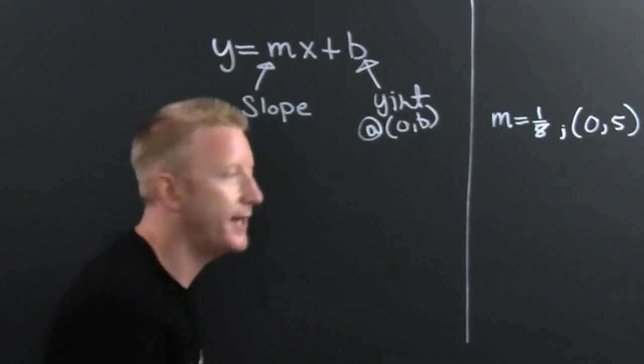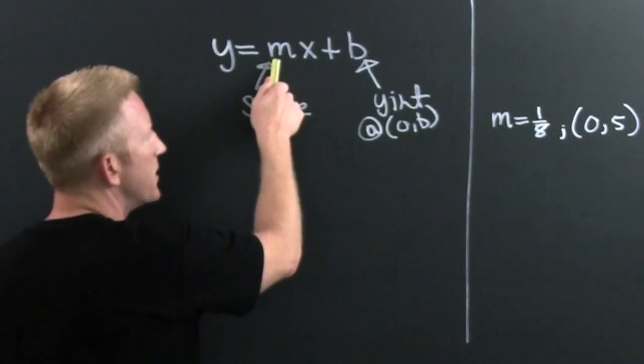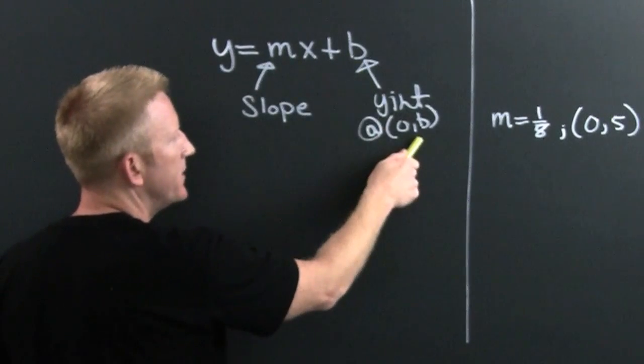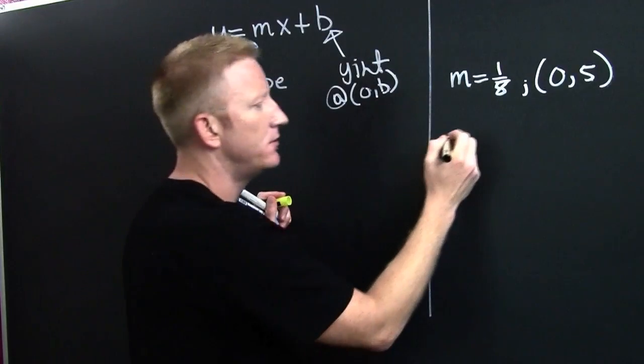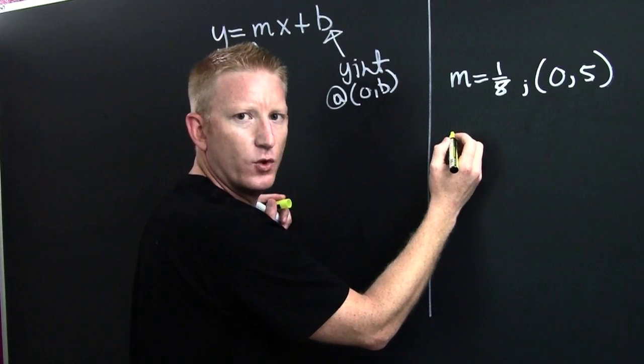I'm trying to find the equation of a line. They give me a point. They give me a slope. Wait. Wait. The slope. The b-coordinate is that one. So then, wait for it. Wait for it.